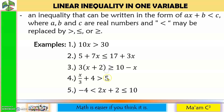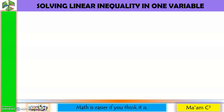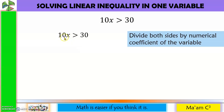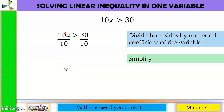Here are some examples. Just like in linear equation in one variable, the exponent of the variable is the invisible 1. Let's start solving. The first step is to divide both sides by the numerical coefficient of the variable. The numerical coefficient is 10, so we divide both sides by 10. 10 and 10 cancel out, giving us X. 30 divided by 10 is 3, so X is greater than 3.